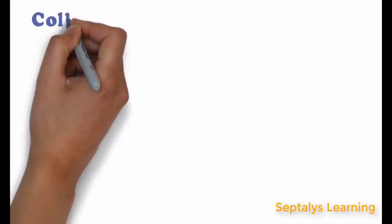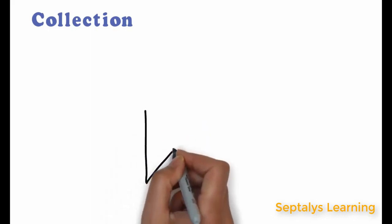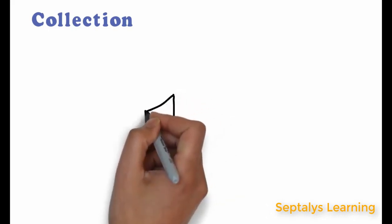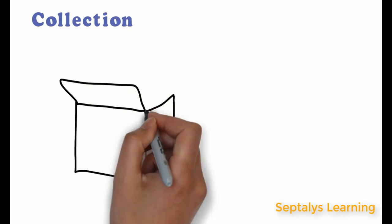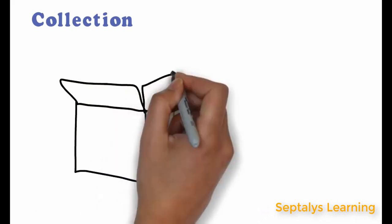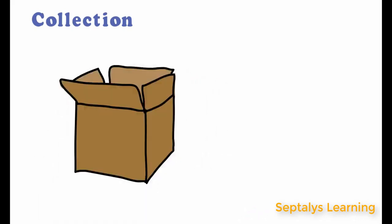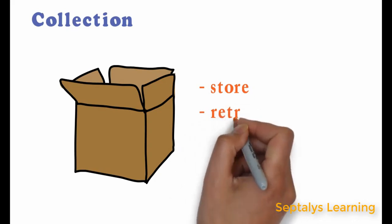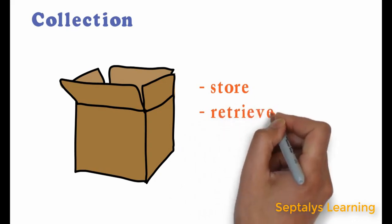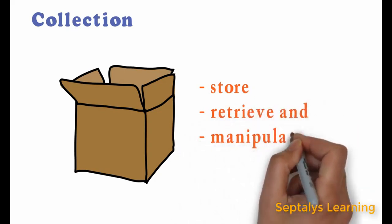A collection, sometimes called a container, is simply an object that groups multiple elements into a single unit. Collections are mainly used to store, retrieve and manipulate data.